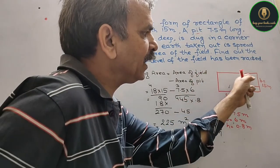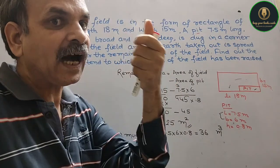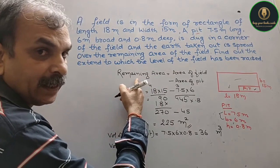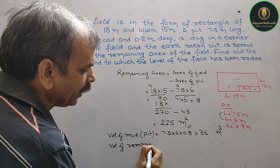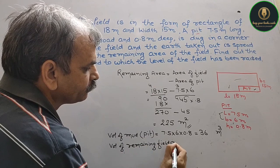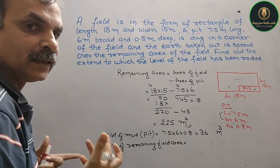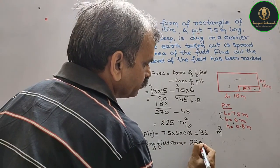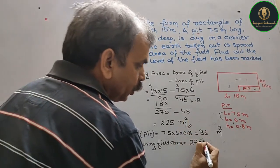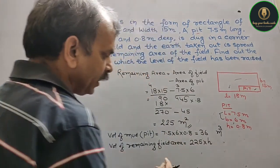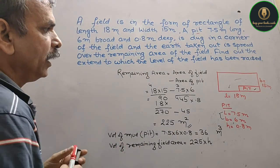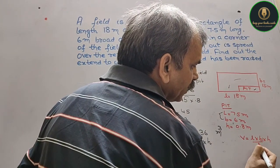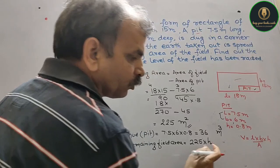Ab aapko isko spread karna hai remaining area mein, then we have to tell ki iska kitna height increase ho gaya. So volume of remaining field area equals area into height. We know V = L × B × H, but L × B is area, so area is 225 and H we have to find out. That equals 36. So 225 × H = 36.